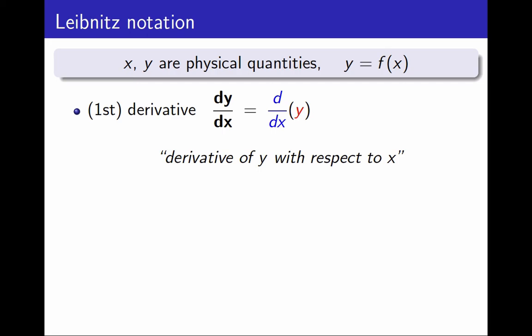With this same notation, how do we write the second derivative? d²y over dx². Why do we put the 2s in those places? Think of it this way.